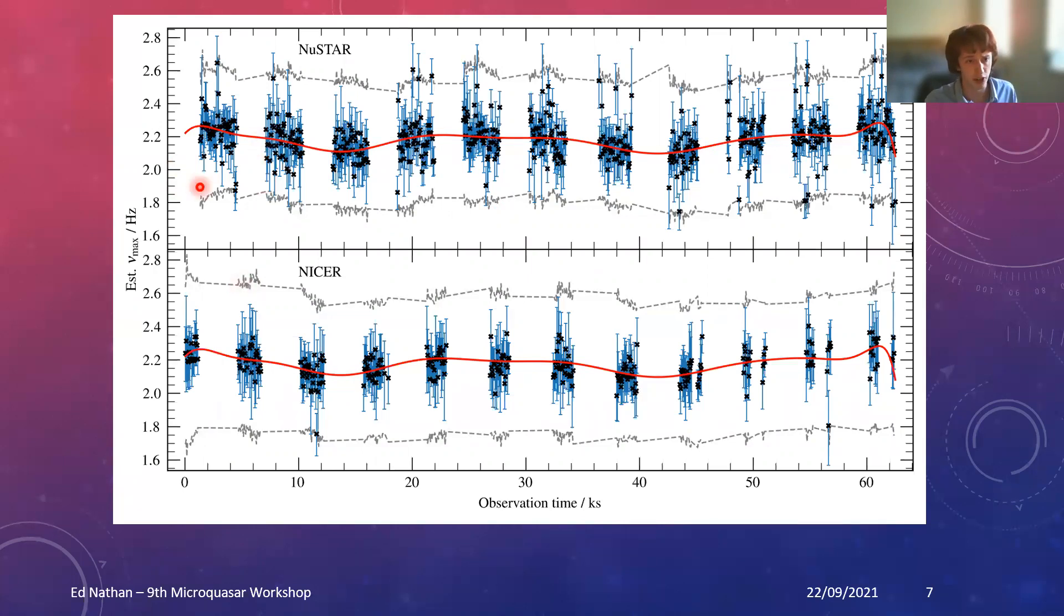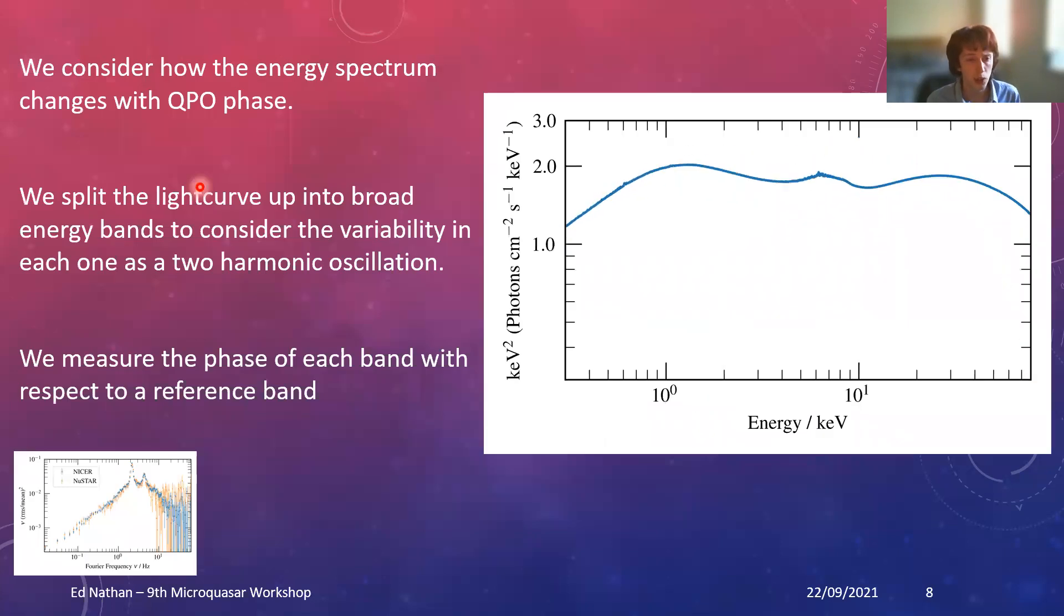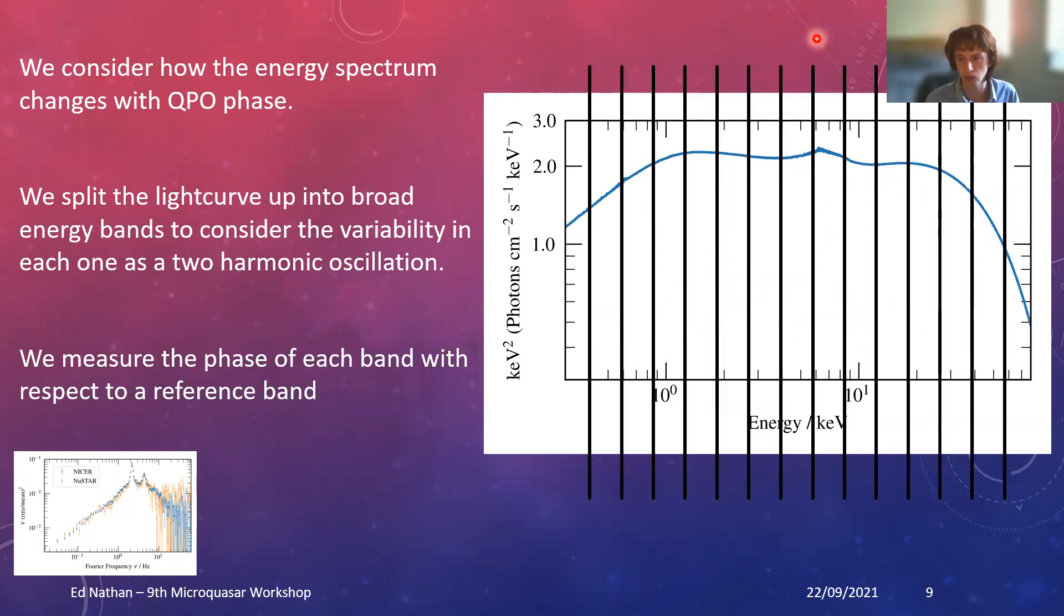If we consider how the energy spectrum changes with QPO phase, this is just a schematic. The first thing we do is use broad energy bands given we want to make sure we've got enough signal to noise in each energy band or channel that we're looking at. You can see here immediately the difference in the RMS in different energy bands. Just a reminder, we're looking at a two harmonic QPO.